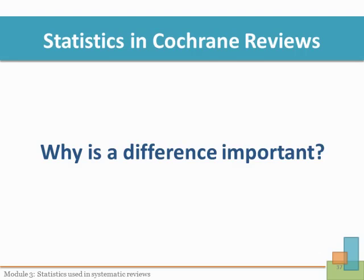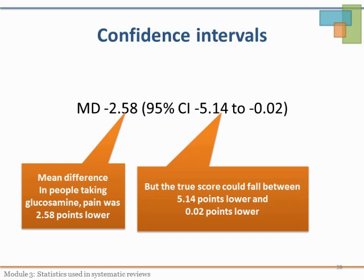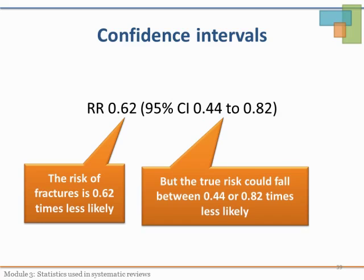The other thing you will see in Cochrane systematic reviews and randomized controlled trials is confidence intervals around an effect. In our example, the mean difference was minus 2.58, meaning that people taking glucosamine had pain 2.58 points lower. The confidence intervals mean that the true effect or true score could fall between the two interval values — in this case, between minus 5.14 and 0.02. So the true effect could be between 5.14 points or 0.02 points lower. The same applies to dichotomous outcomes: if the risk of fractures is 0.62 times less likely, the true effect considering confidence intervals could be between 0.44 and 0.82 times less likely.